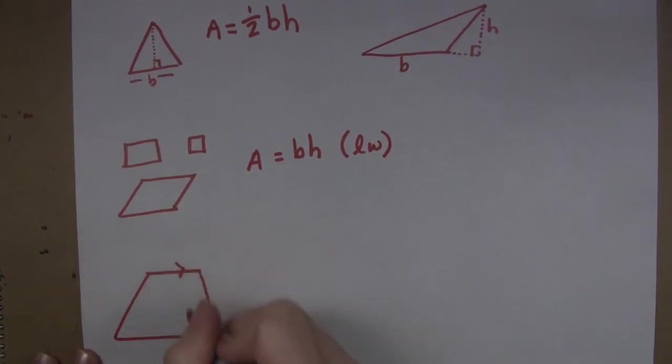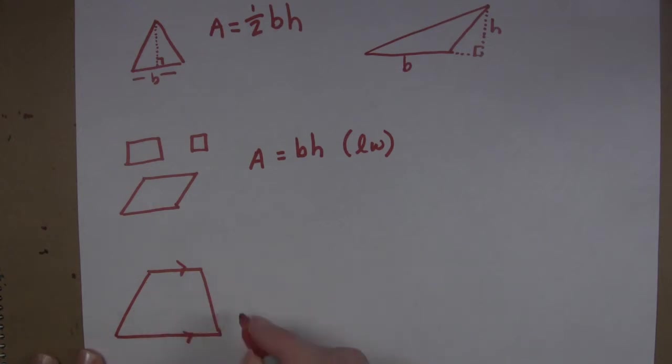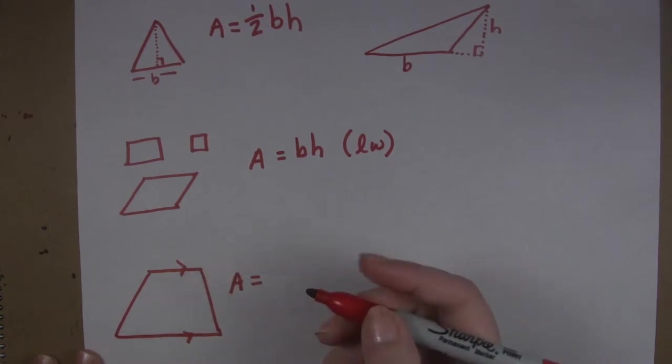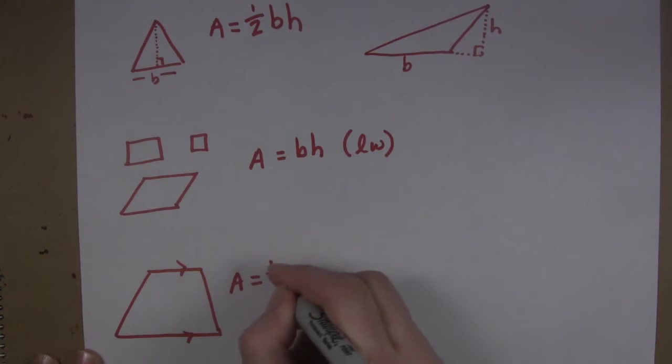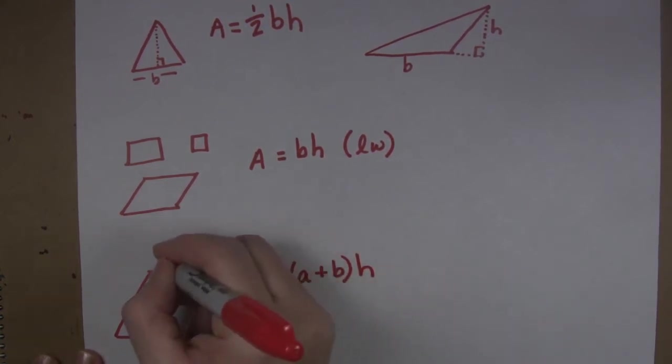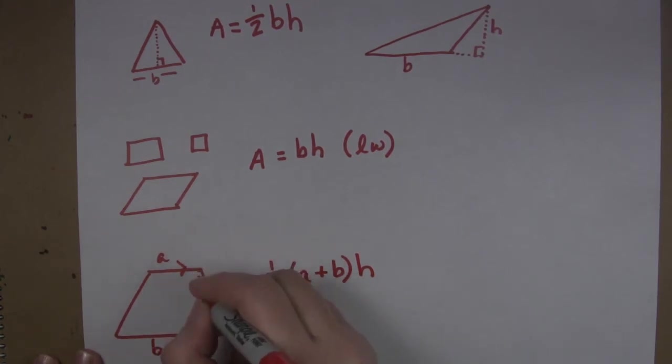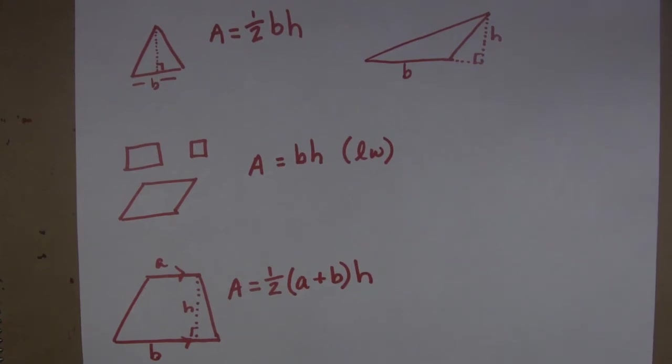And remember with the trapezoid that means that we have top and bottom are parallel to each other. The other sides may or may not be congruent but are definitely not parallel. So the formula for the area of a trapezoid is one half a plus b times h. That's a, this is b and then we measure h. Okay so yes you have to know that. You have to memorize that. This needs to be a part of who you are.